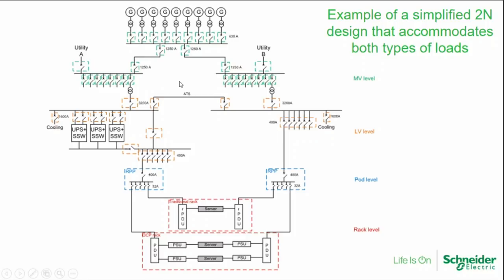Right-sizing all the components, only putting what's necessary. This is a 2N design, which is the most typical architecture for enterprise data centers and co-location, but the UPS system is only on one side. You still have two paths and can do concurrent maintainability, but your battery backup is on one side, which optimizes cost and increases efficiency by keeping components running at a good load. At the bottom we're demonstrating how you can have traditional servers fed off regular circuits and off the same RPP alongside open compute racks.